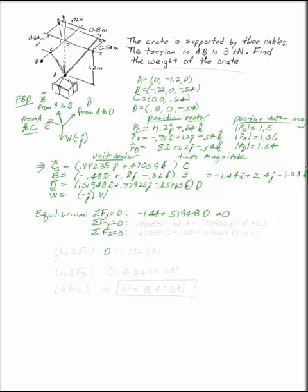That means you can solve by this one. By the sum of the forces in the x, we know that D has to be 2.772 kN. That's the tension in the chord from A to D.